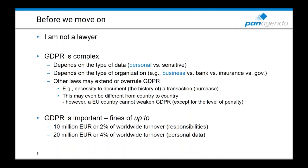There are two areas that can result in fines. First, if you do not comply with the responsibilities of the GDPR — independent of whether there's a data breach — fines can be as high as 10 million euros or 2% of worldwide turnover, whichever is higher. For a company like Apple, 2% of worldwide turnover is far more than 10 million. In case of a data breach, fines can go as high as 20 million euros or 4% of worldwide turnover.